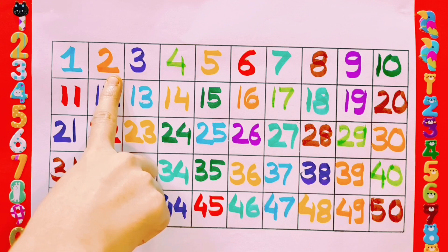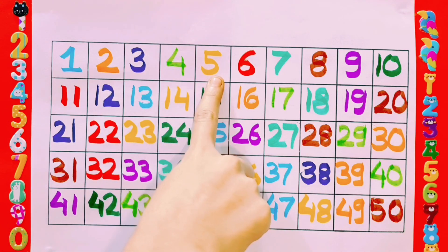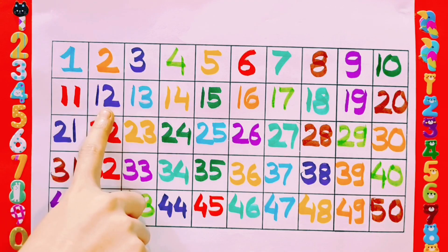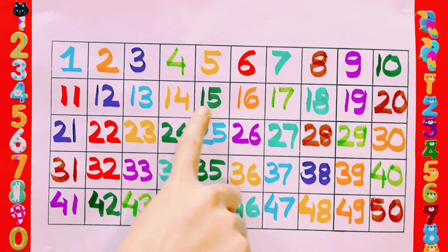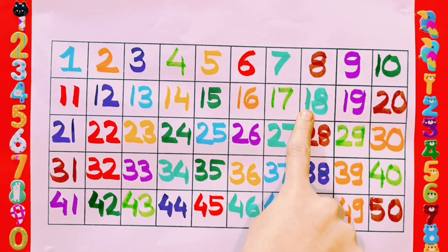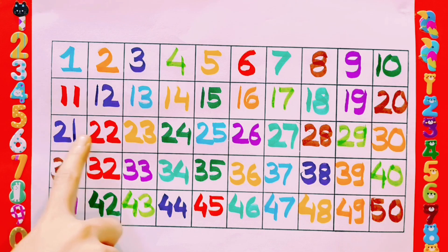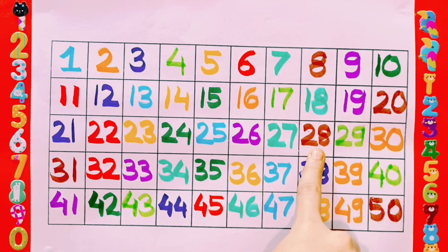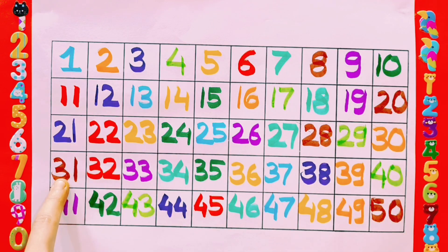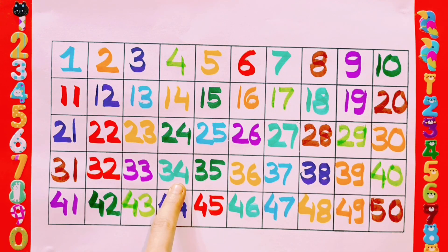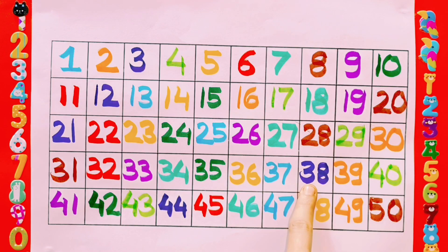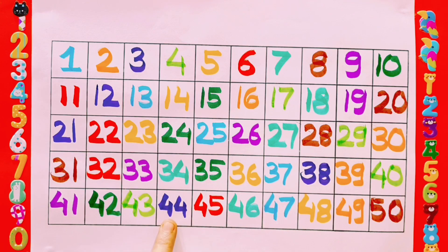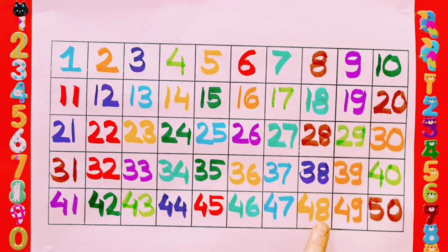1, 2, 3, 4, 5, 6, 7, 8, 9, 10, 11, 12, 13, 14, 15, 16, 17, 18, 19, 20, 21, 22, 23, 24, 25, 26, 27, 28, 29, 30, 31, 32, 33, 34, 35, 36, 37, 38, 39, 40, 41, 42, 43, 44, 45, 46, 47, 48, 49, 50.